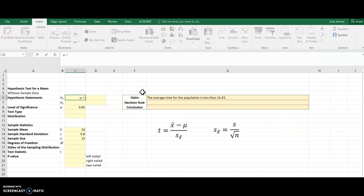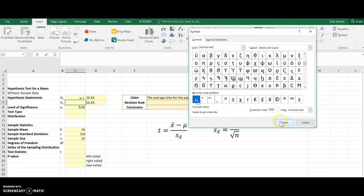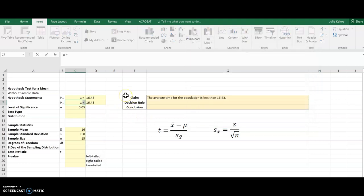So I'll make this one equal 16.43. The next one is also going to be the same, and they want less than, so less than 16.43. And that alternative hypothesis is my claim, so I'll just make a note for myself there for later.